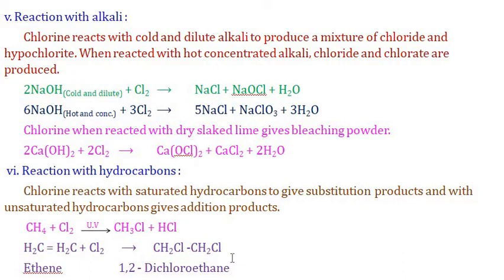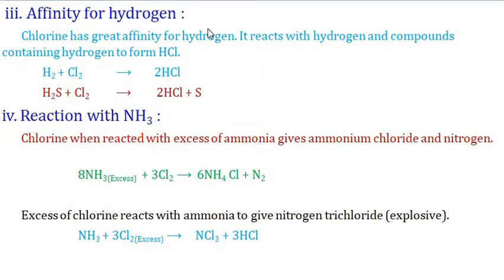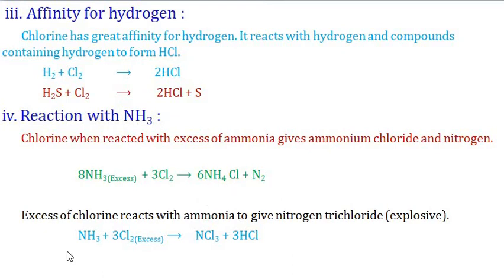Affinity for hydrogen: chlorine has a great affinity for hydrogen and reacts with hydrogen-containing compounds to form HCl. For example, hydrogen sulfide reacts with chlorine to form HCl and elemental sulfur, and H2 reacts with Cl2 to form HCl. Reaction with ammonia: ammonia reacts with excess chlorine to form nitrogen trichloride (NCl3), which is an explosive compound, along with HCl. With excess ammonia, ammonium chloride is formed with N2 gas.